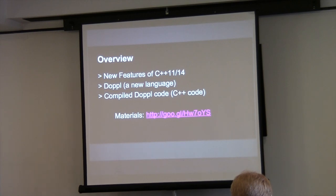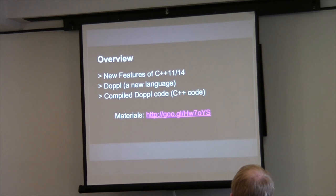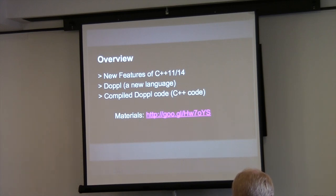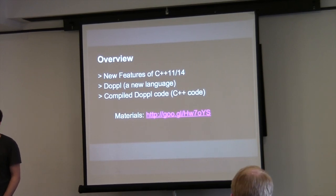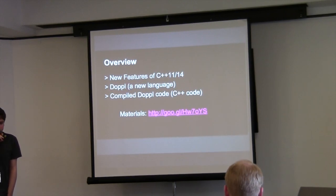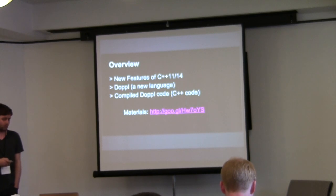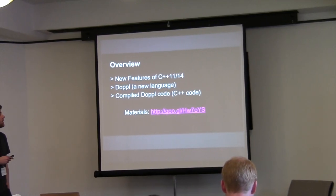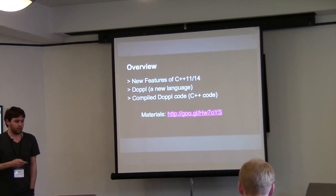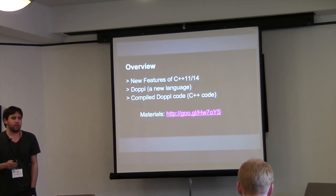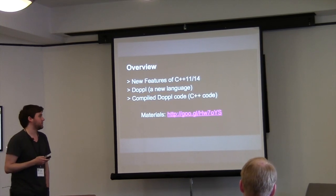I know this is a C++ conference, so the amount of code will be minimum, just to make sure that we all understand the features that we will implement using C++, and then the compiled code that is C++ itself. You can grab the materials from this link. The whole code introduced here, as well as the local code itself, is available in a GitHub repo. The presentation itself is also there. Please feel free to interrupt me, because there are going to be code pieces that might not be familiar.